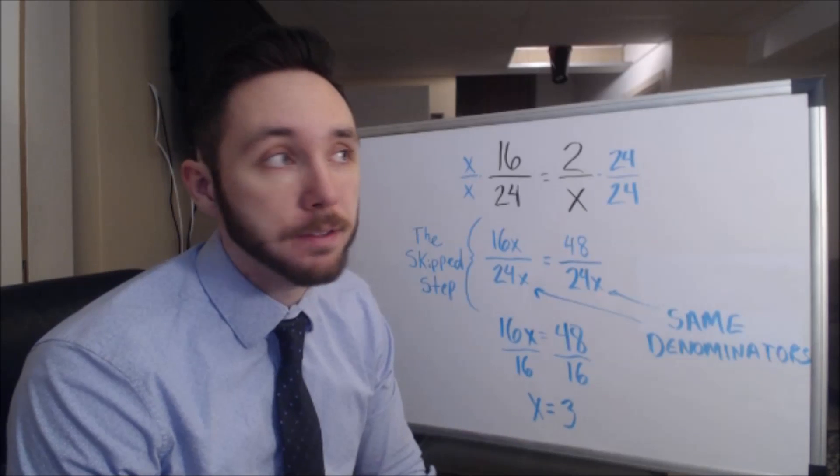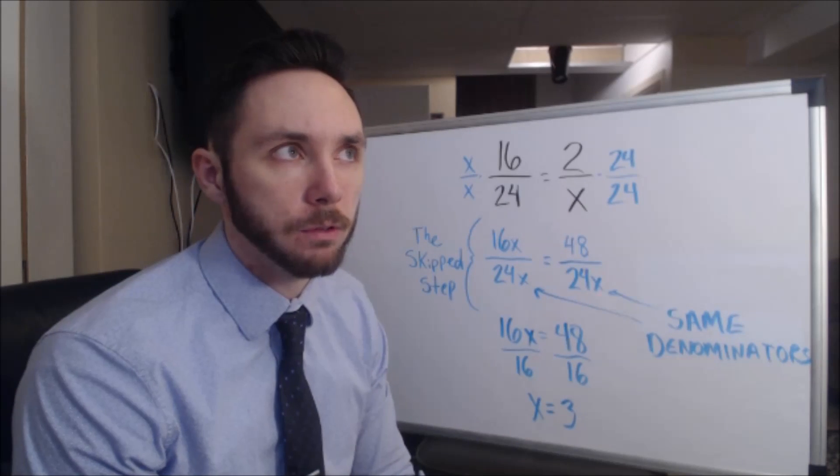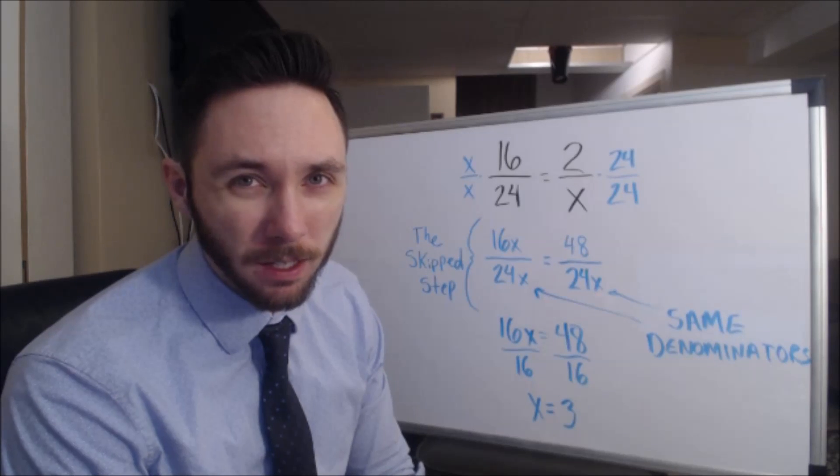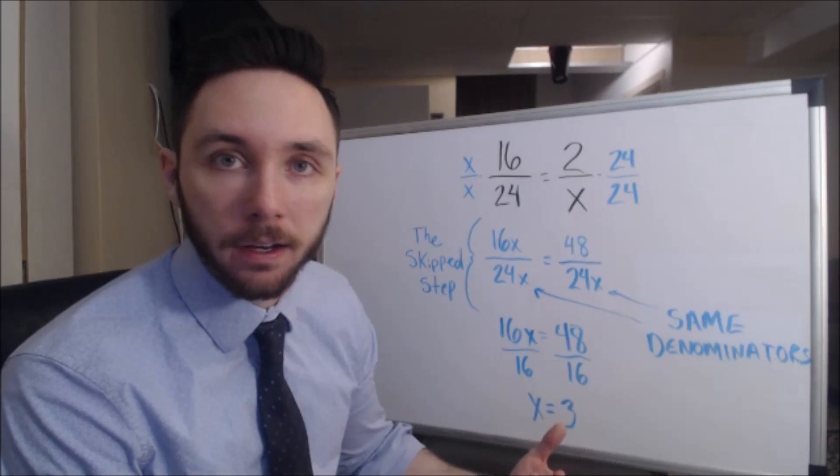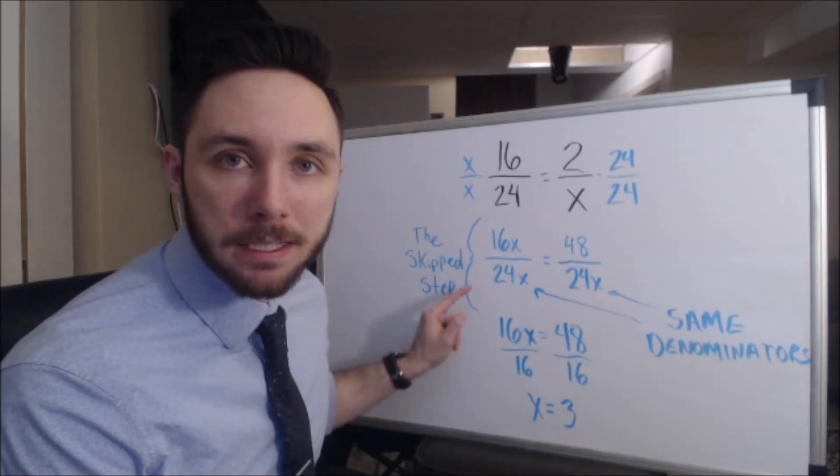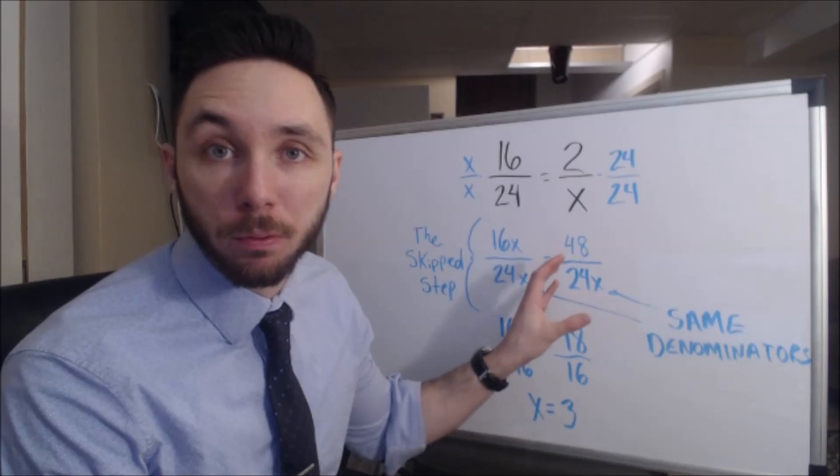Just like how if I asked, 3 over 2 is equal to what over 2? Well, 3 over 2. Duh. It's the same line of thought. So this is that skipped step, that step that occurs in between. So yeah, cross-multiplication is definitely more effective.